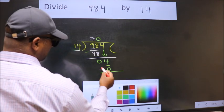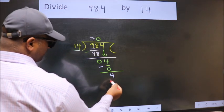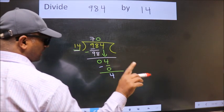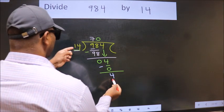Now we subtract. We get 4. Over here, we did not bring any number down, and 4 is smaller than 14.